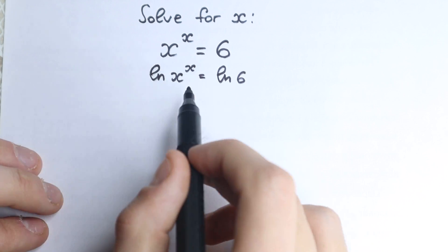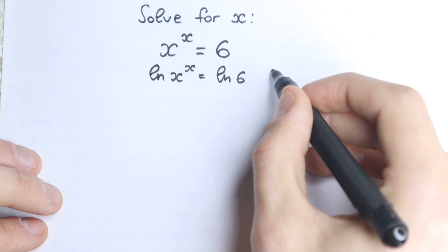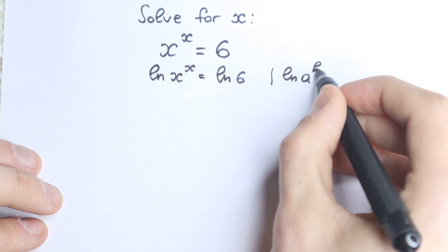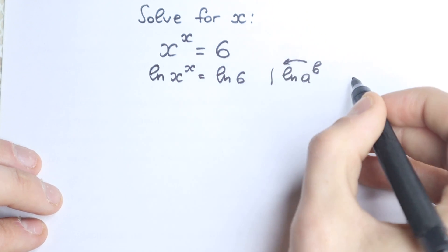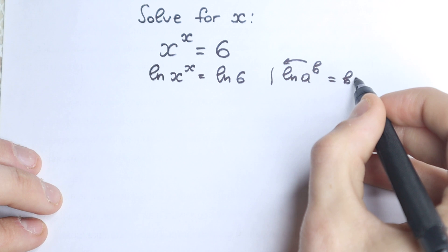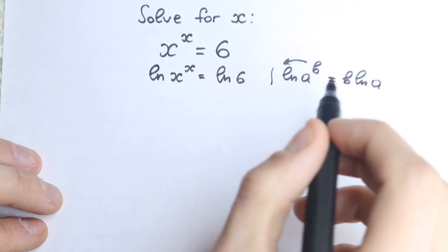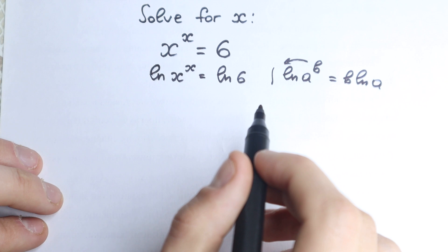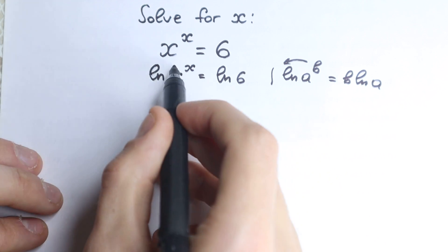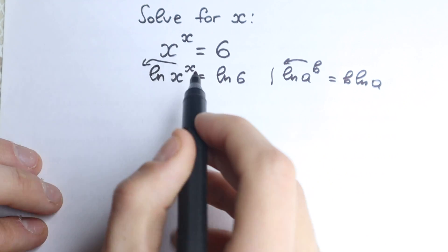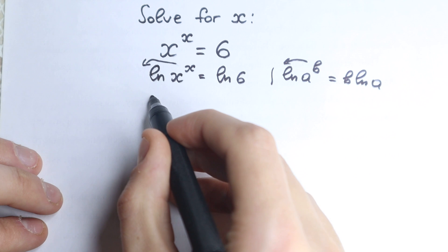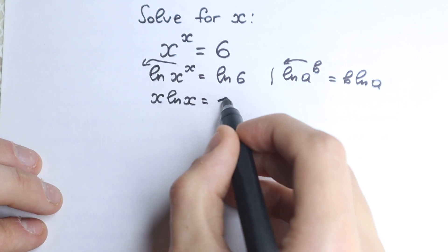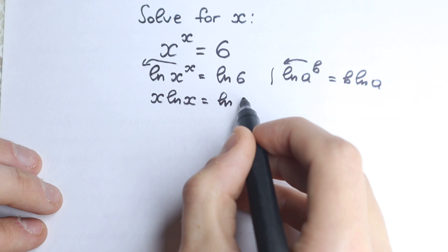But on the left hand side, from school you need to know a really great rule. If we have natural log of a to the power b, this b jumps out as a product. This is maybe the main log property, the main log rule. And we really need it because right now x jumps out, and as a result we have x times natural log x equal to natural log 6.